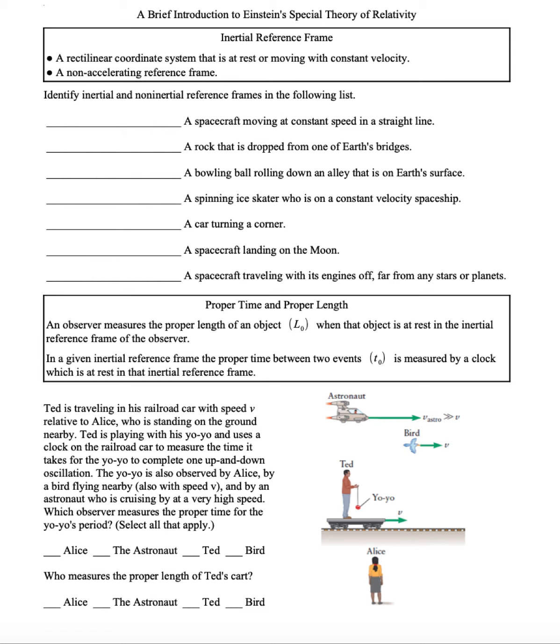This is a brief introduction to Einstein's special theory of relativity. First, we should discuss what an inertial reference frame is. It is a rectilinear coordinate system that is at rest, or perhaps moving with constant velocity, but it is a non-accelerating reference frame.